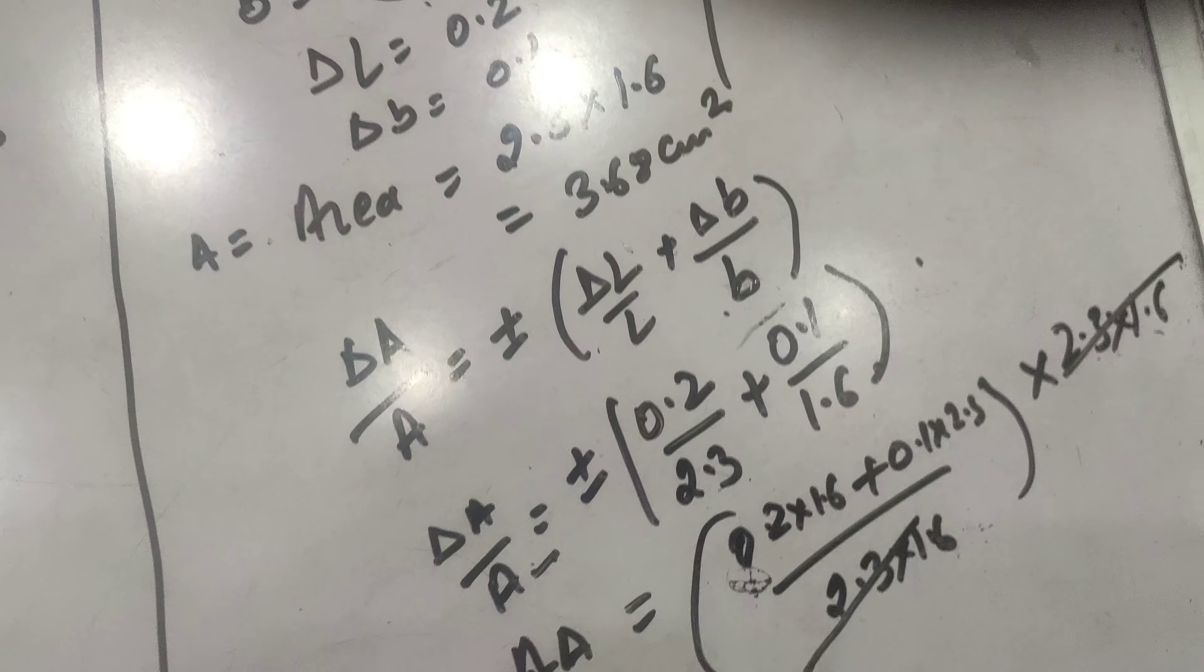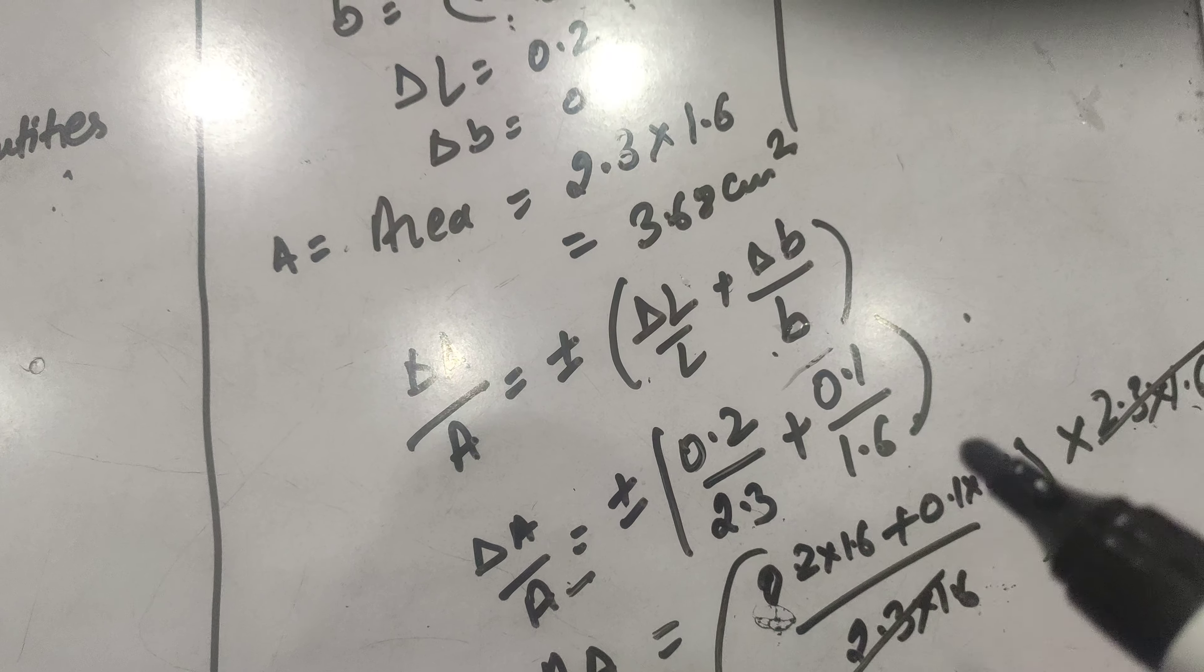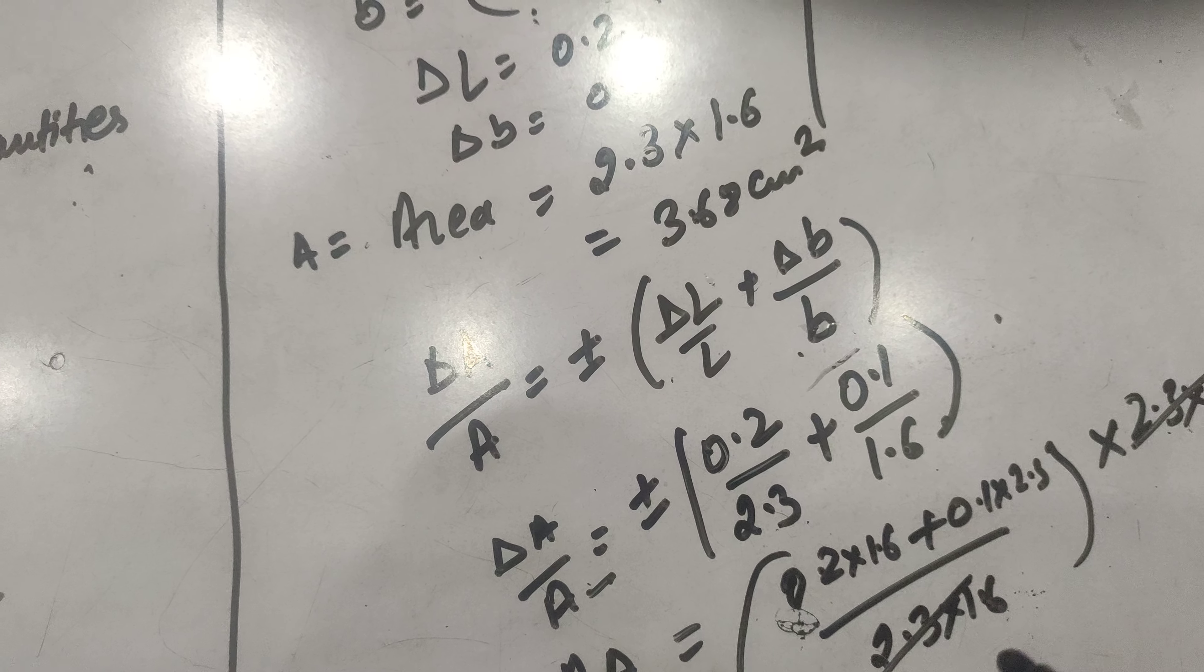Let us continue. We have done here delta A is equal to 0.2 into 1.6 plus 0.1 into 2.3 by taking the LCM.